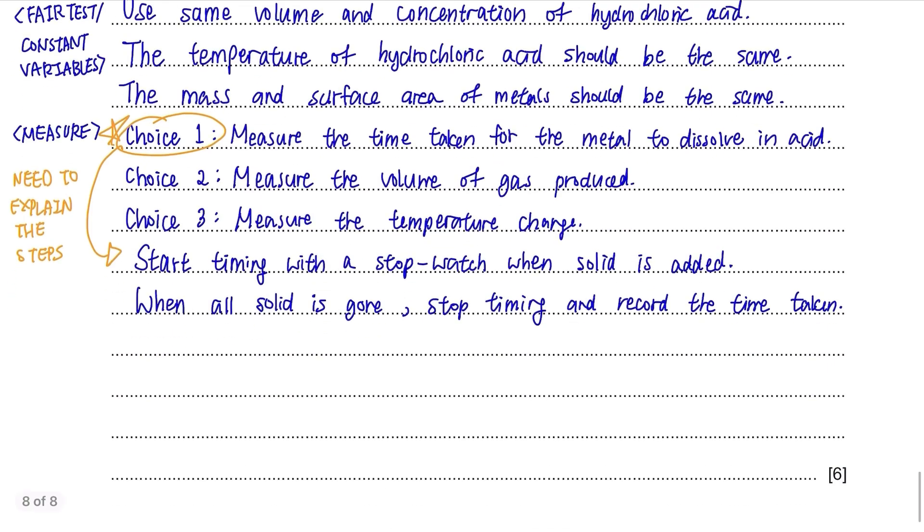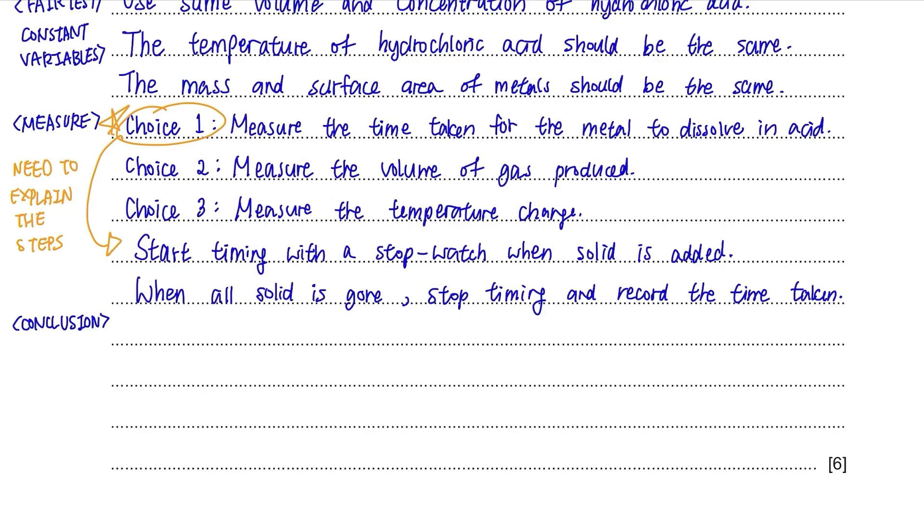The last part is the conclusion. You don't need to state the results but just write about the relationship between the independent variable, in this case the type of metal, and the measurement you took which is the time taken for the metal to dissolve. The metal that took the shortest time to be gone is the most reactive and the one that took the longest time is the least reactive.